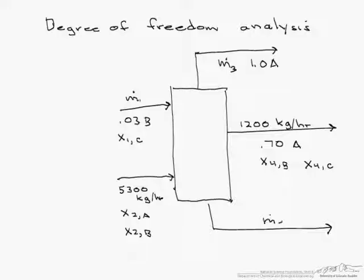From the bottom of the column we have some flow rate that we're going to call m5 and it has a mass fraction of 0.6 that is b and the rest of this is c.